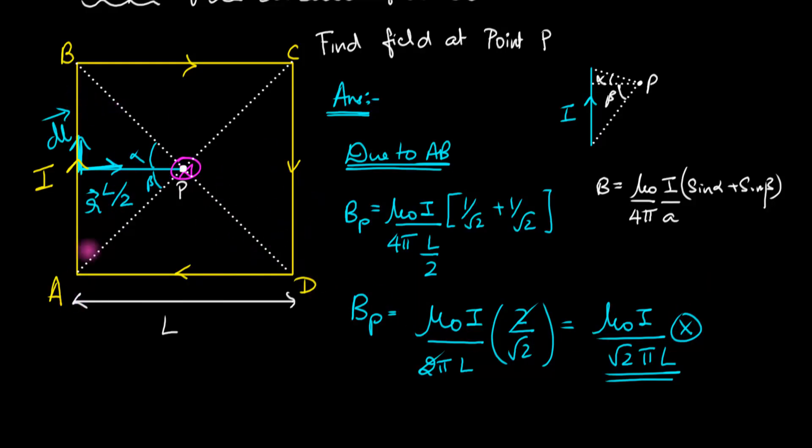Now notice that the magnetic field due to BC will be exactly the same, because the perpendicular distance is also L/2 and the angles are also 45 degrees. The same will work for CD and AD, so all four sides contribute equally.